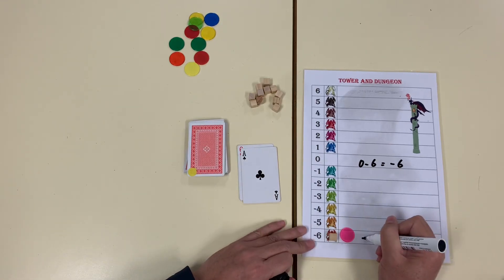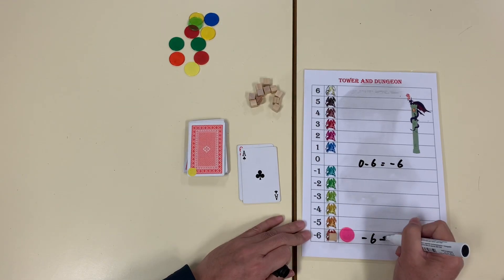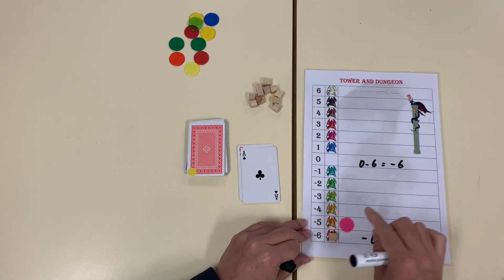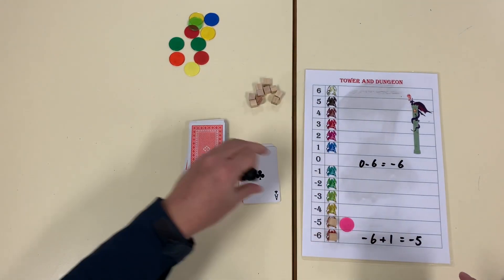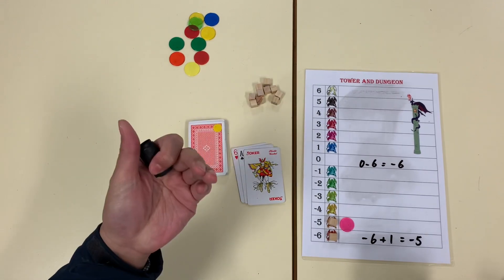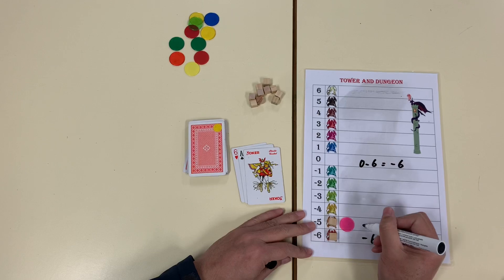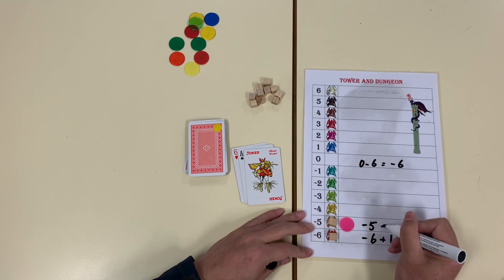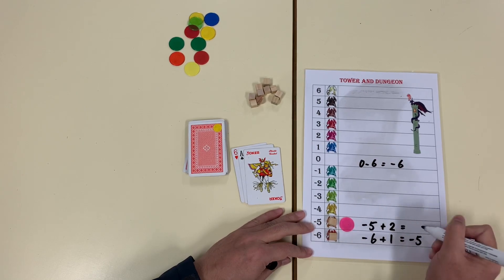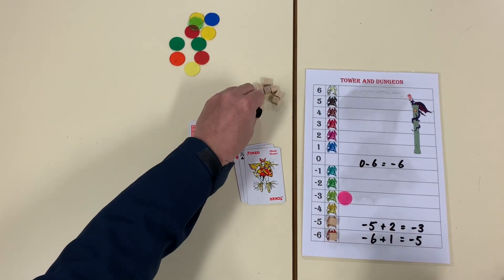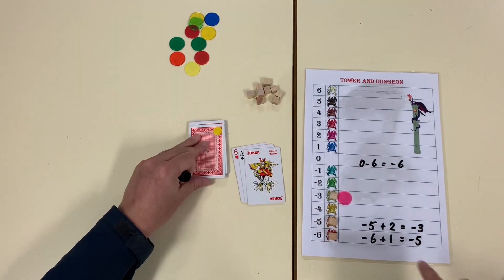One. Well, minus six, I have to climb up one. Minus five. Let's see. Joker. I am going to pick two. So I'm on minus five, I go up two, so I'm going to be on minus three, floor minus three. I can still play.